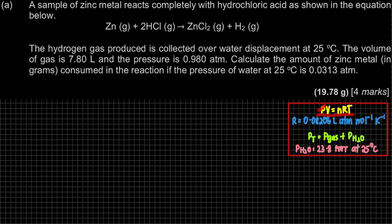In PV = nRT: P is pressure, V is volume, n is number of moles, R is the gas constant, and T is temperature. For Chapter 5, since we're talking about gas molecules, we take R = 0.08206 L·atm·mol⁻¹·K⁻¹. Note there are two values of R on the list of constants — use this one for gas problems. Temperature T must be in Kelvin.